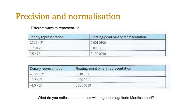Now let's look at this in practice - how precision and normalization actually works. On screen you see different ways to represent plus 2. So we can have 0.125 times 2 to the power of 4, 0.25 times 2 to the power of 3, 0.5 times 2 to the power of 2, and you also see the floating-point binary representation. The second table works out a negative number using the same kind of process. What I want you to focus on is what do you notice in both tables with the highest magnitude mantissa part?